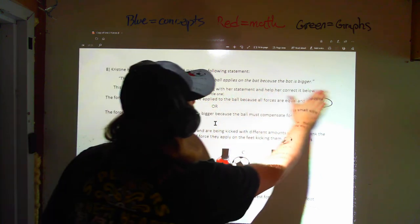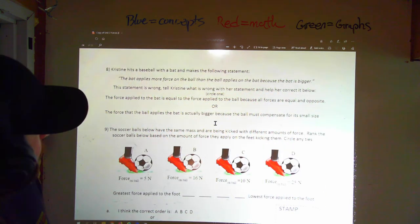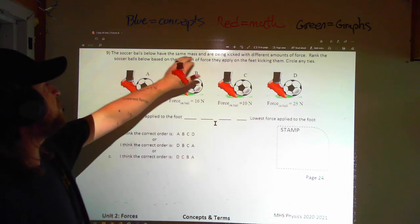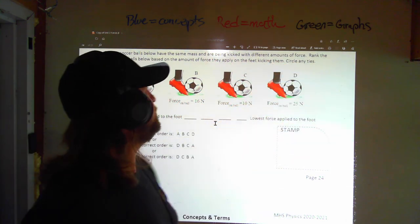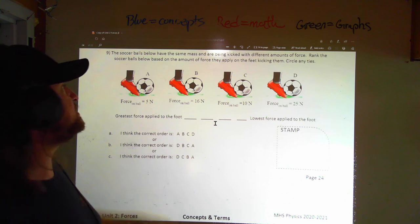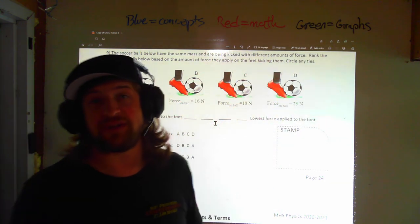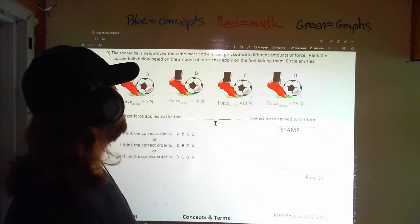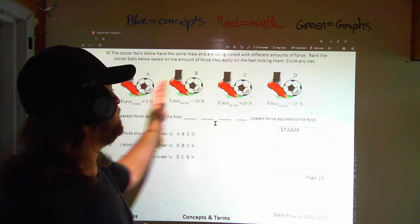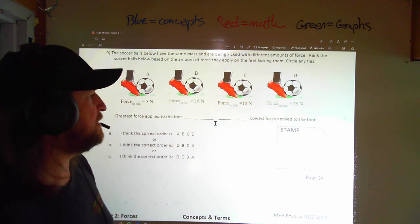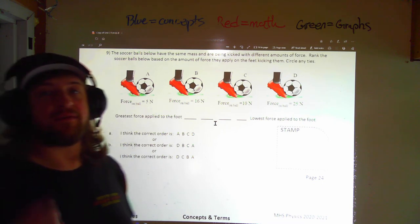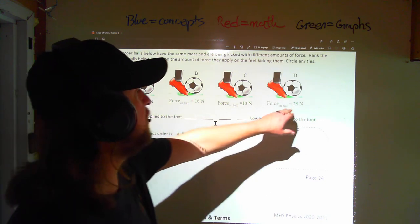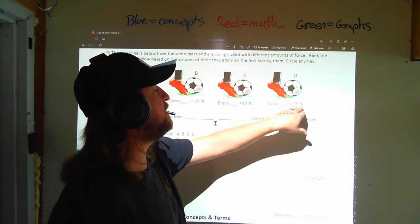All right. Let's go on to number nine. And check that out. We're almost done. In number nine, we have soccer balls below. They have the same mass and they're being kicked with different amounts of force. We need to rank the soccer balls based on the force that the foot experiences that's kicking them. So, we know how much force the soccer ball is experiencing. We want to know what is the order of what foot experiences the most force between this range of forces. And the key to this again is simply remembering that for every action force, there's an equal and opposite reaction force.